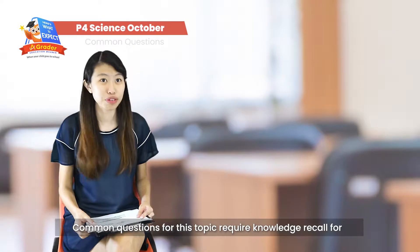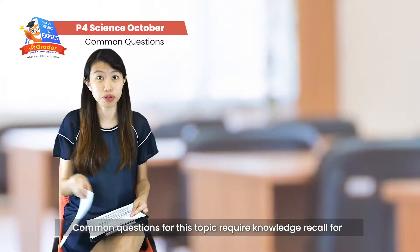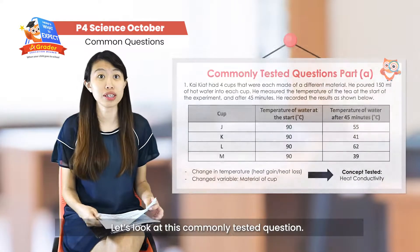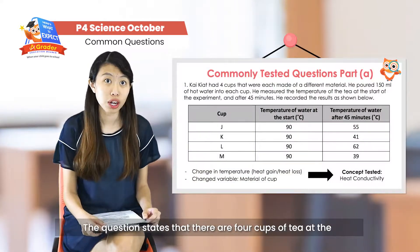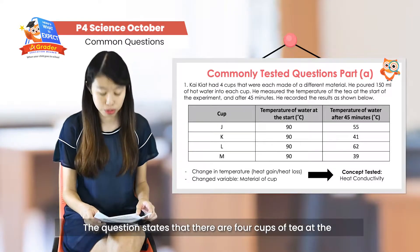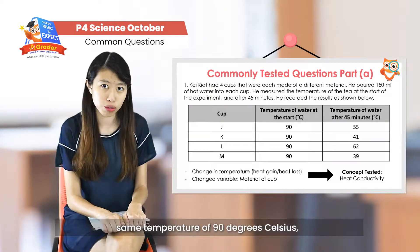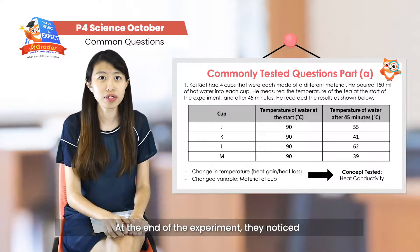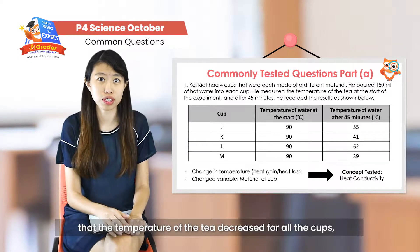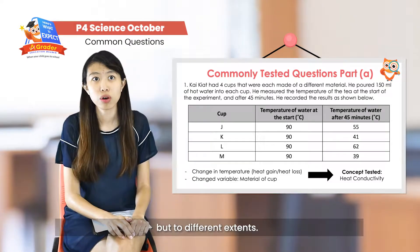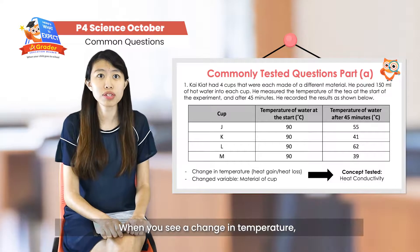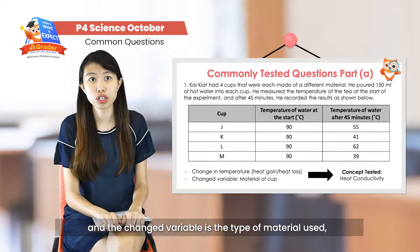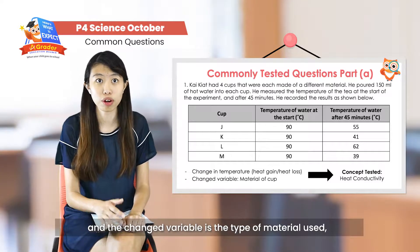For common question types, this topic requires knowledge recall for explanation questions and experiments. Let's look at a commonly tested question. The question states that there are four cups of tea at the same temperature — 90 degrees Celsius — and each cup is made out of a different material. At the end of the experiment, the temperature of the tea decreased for all of them, but to different extents. So when you see a change in temperature involving heat gain and heat loss, and the changed variable is the type of material, we can deduce that they are testing heat conductivity of materials.